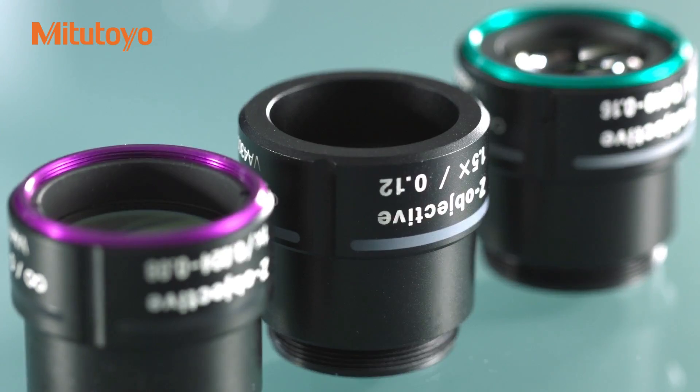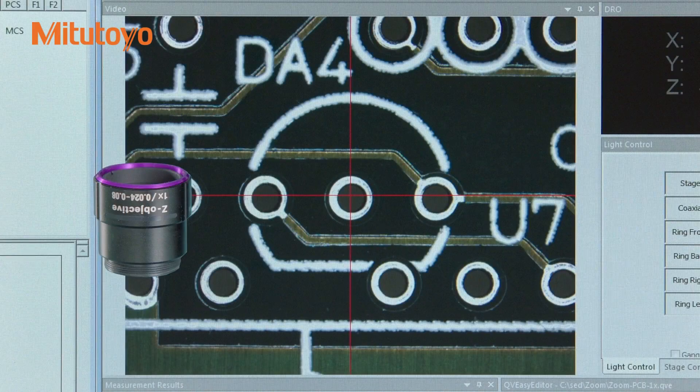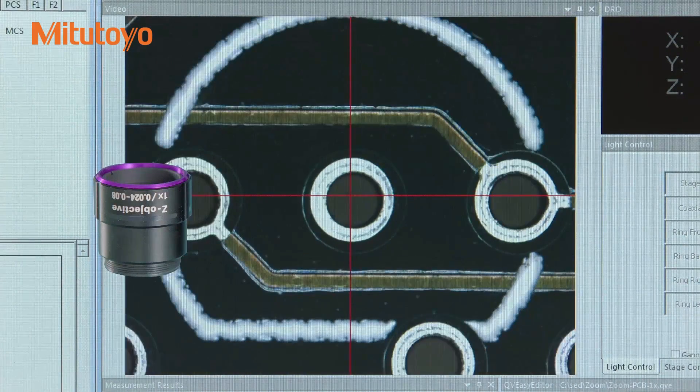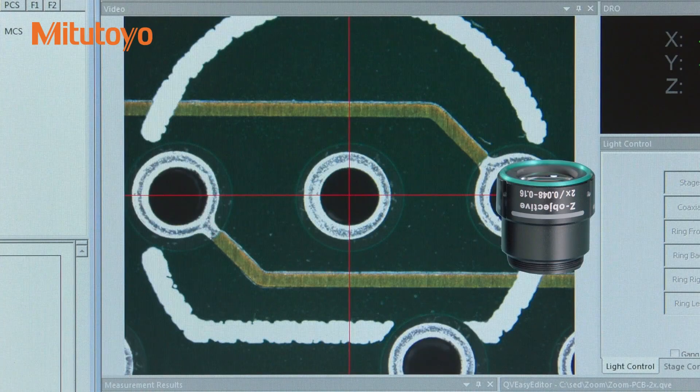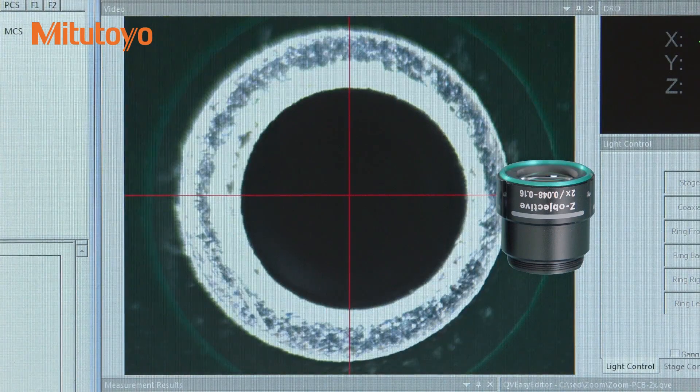The 1x optional objective achieves a magnification range of 0.5 times to 3.5 times. The 2x option can achieve a magnification range of 1 to 7 times.